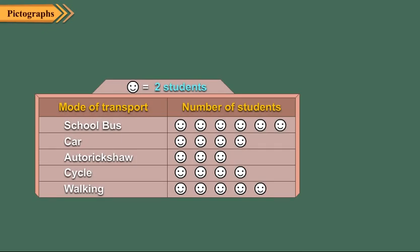Observe this pictograph. The title of this pictograph is Modes of Transport Used by Students. The key of this pictograph is one smiley equals two students. It means each symbol of smiley represents two students. Obviously, it is more attractive to look at than a table.